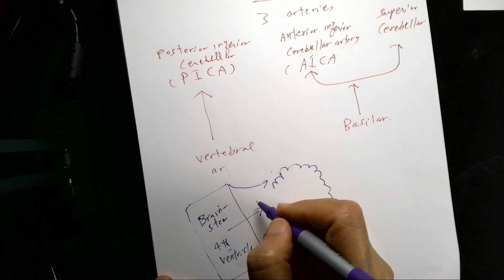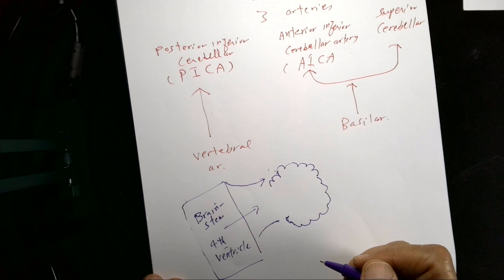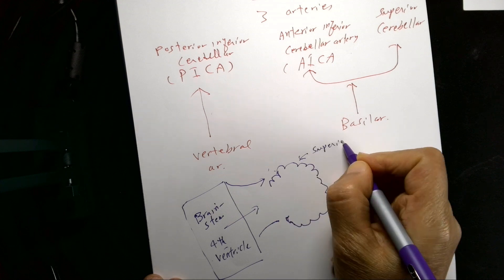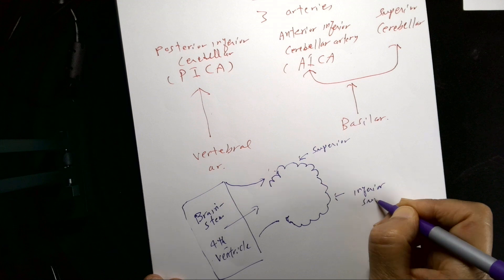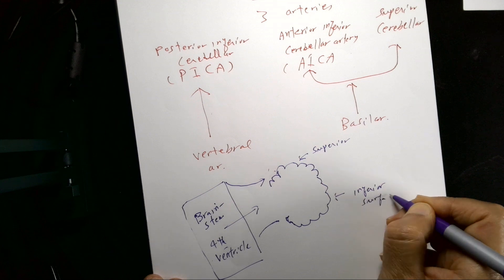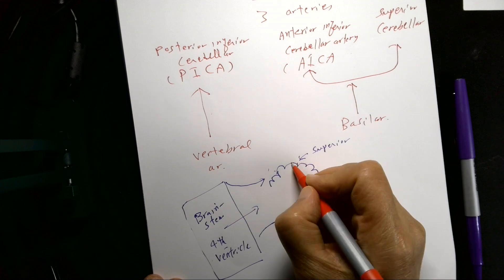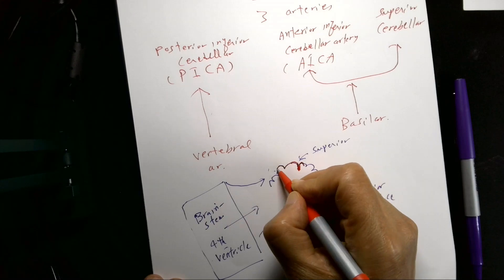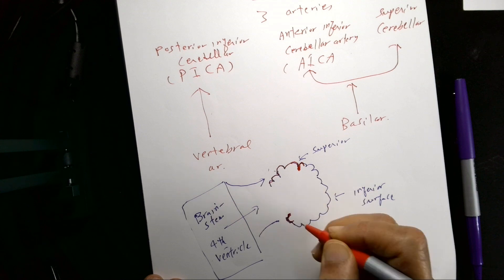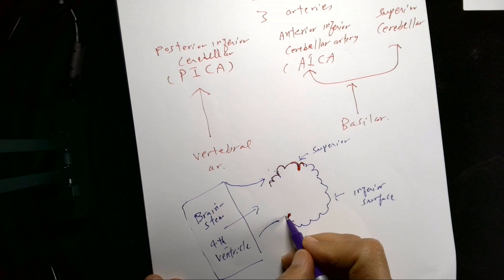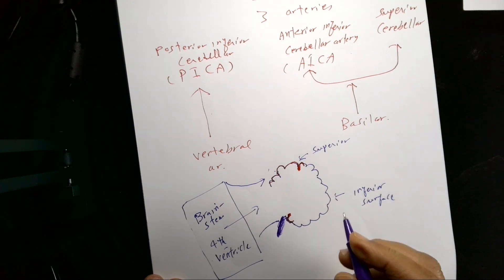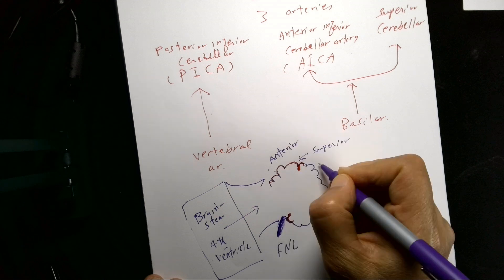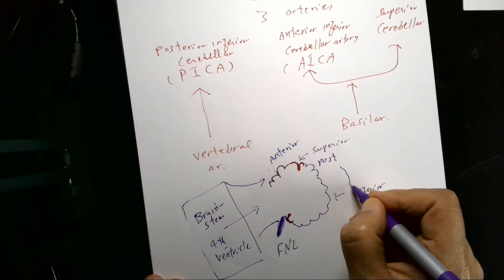The cerebellum forms the roof of the fourth ventricle. This is the superior surface, and this is the inferior surface. Keep in mind there is a deep fissure — the primary fissure — dividing the anterior lobe and the posterior lobe, and the posterolateral fissure separating the posterior lobe from the flocculonodular lobe.